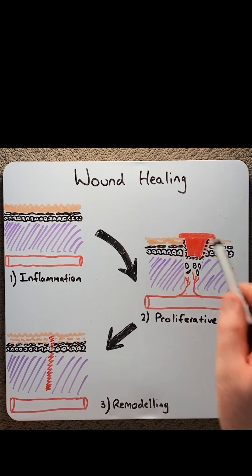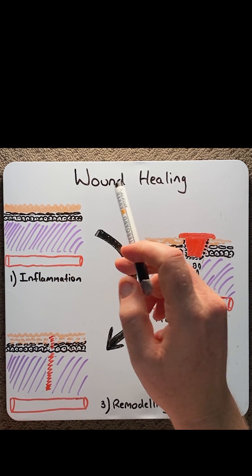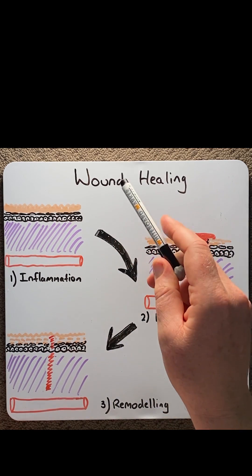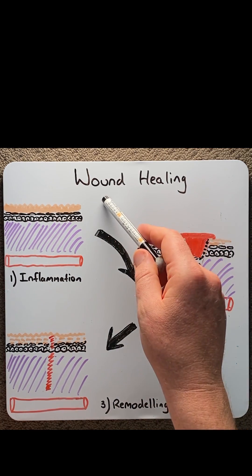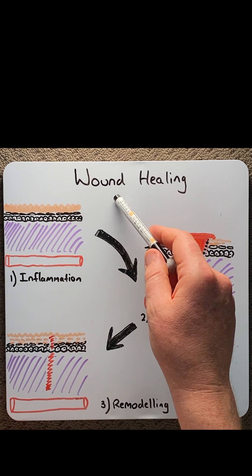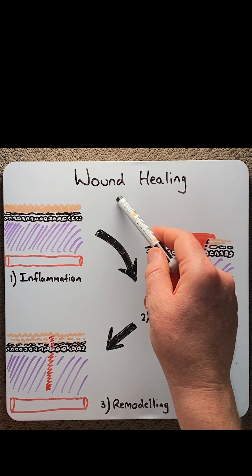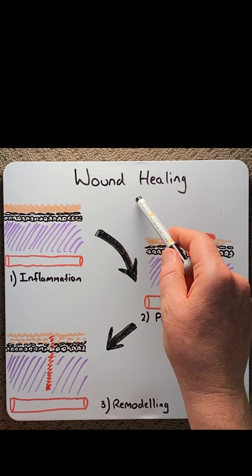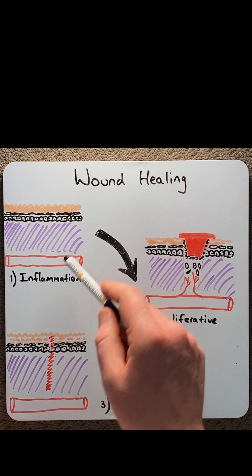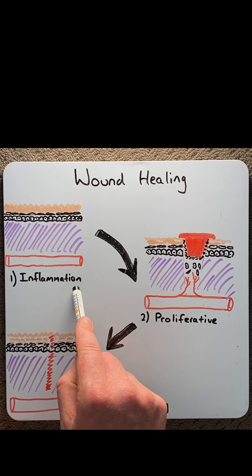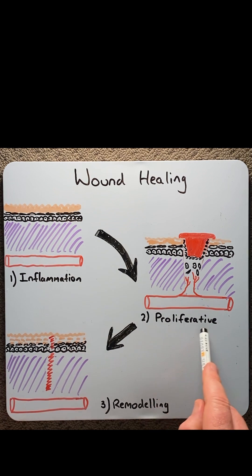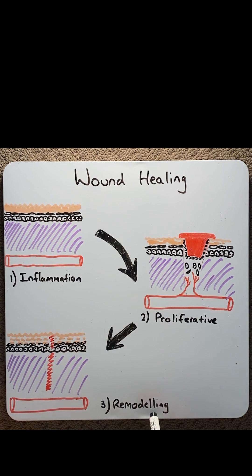Wound healing consists of filling the gap caused by injury and tissue destruction, followed by the restoration of tissue continuity through three phases: number one, the inflammatory phase; number two, the proliferative phase; and number three, the remodeling phase.